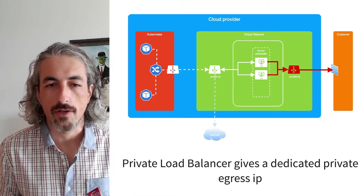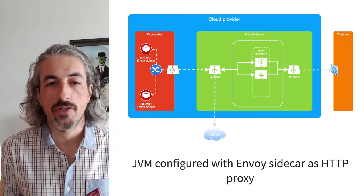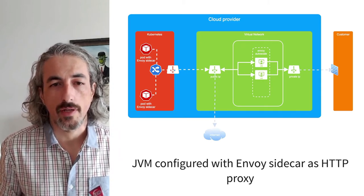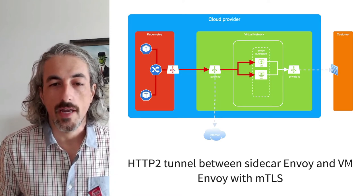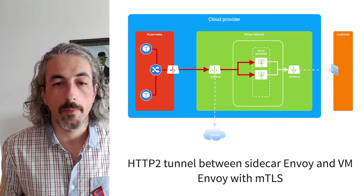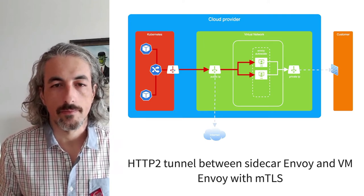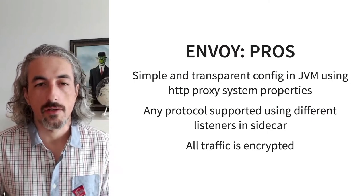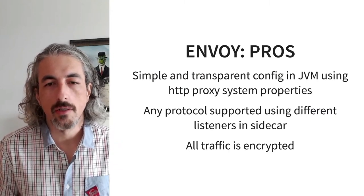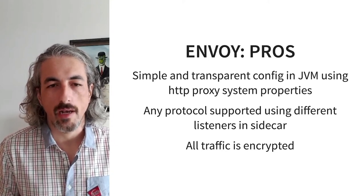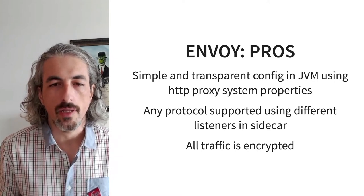On the Kubernetes side, we have a Java virtual machine configured with an Envoy sidecar as an HTTP proxy, so traffic from that JVM goes to the Envoy sidecar. The network between the sidecar Envoy and the Envoy VMs uses an HTTP/2 tunnel that is encrypted and authorized with mTLS. The benefit for the JVM is simple and transparent configuration — we use HTTP proxy system properties, which is a Java-level configuration that applies to most HTTP connections leaving the JVM.